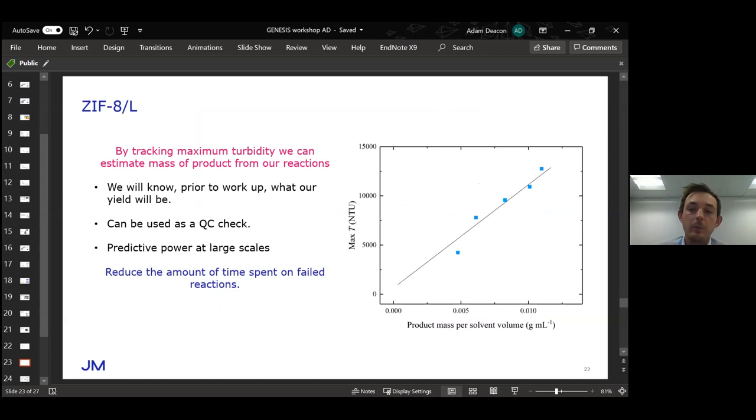One of the things we've been able to do using these measurements is to estimate the yield of the product we're producing. This is a really viable tool for us because we can use it as a quality control check. It's also quite powerful at a larger scale to understand if our reaction is successful or not, whether we stop the reaction and start again or carry on. It significantly reduces the amount of time we've spent on failed reactions.